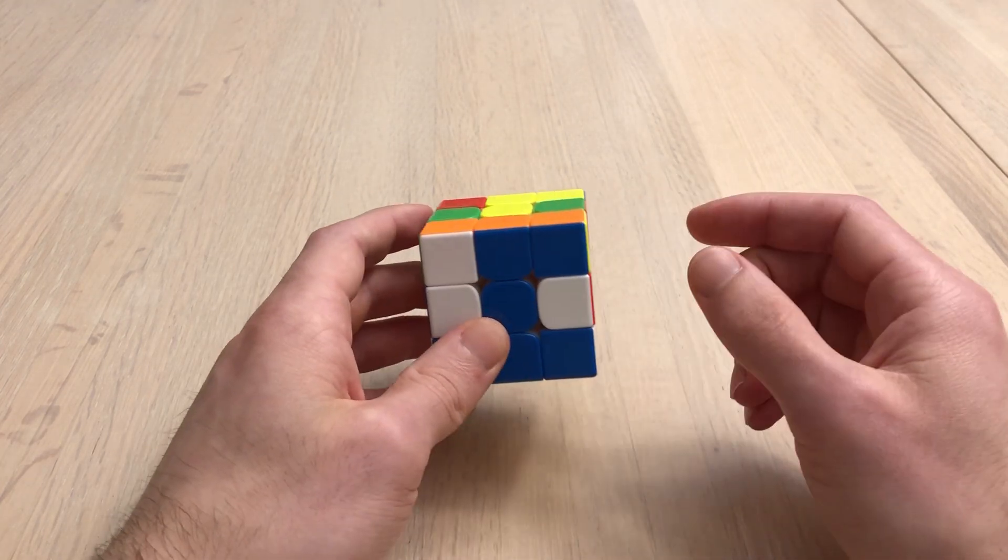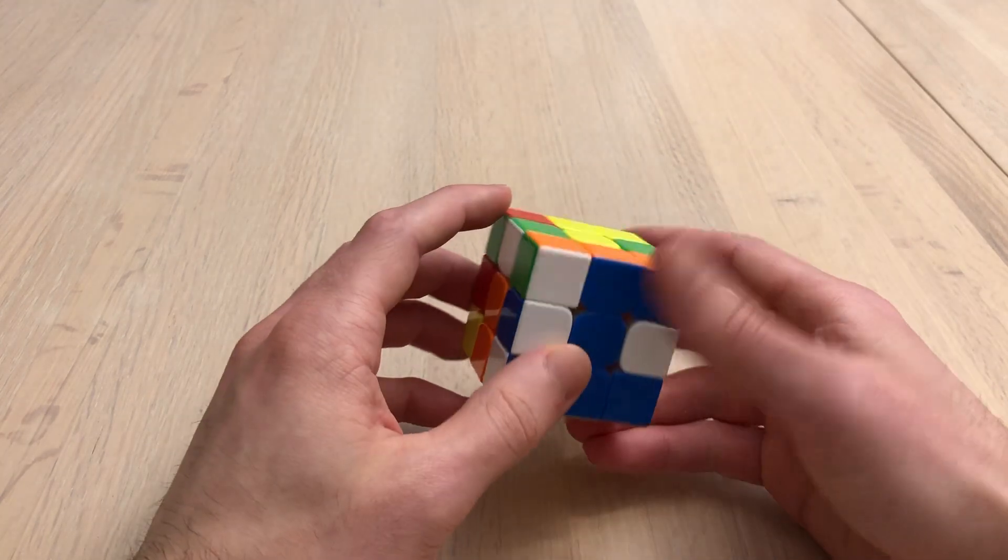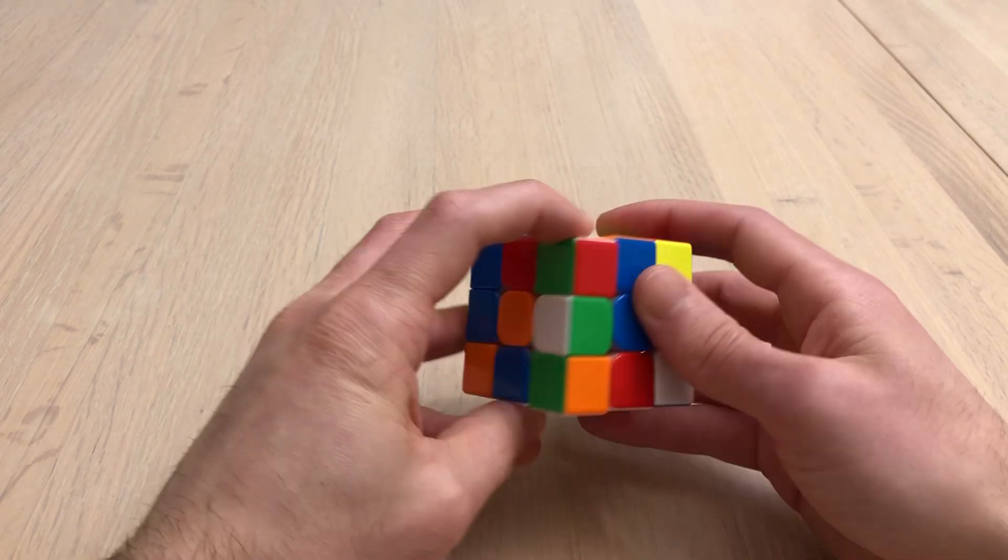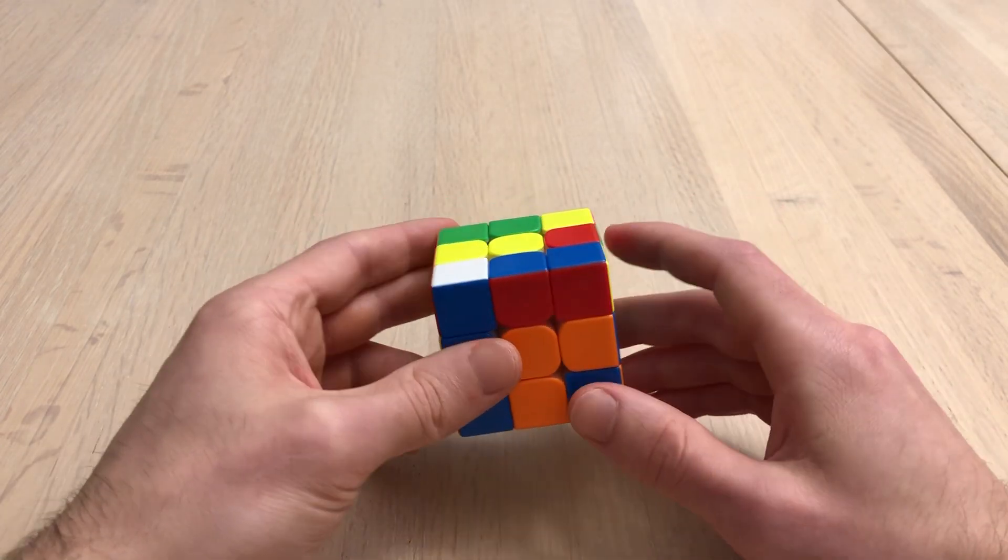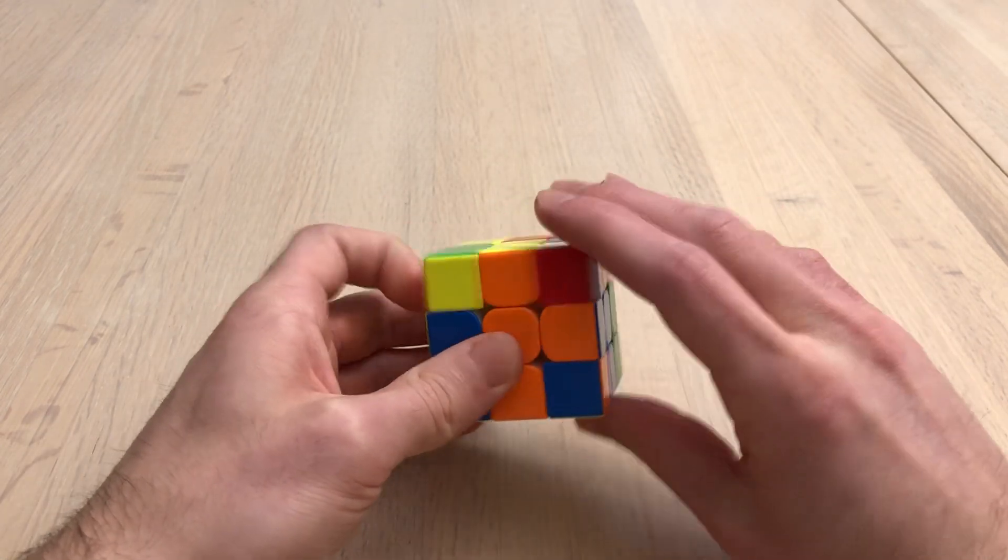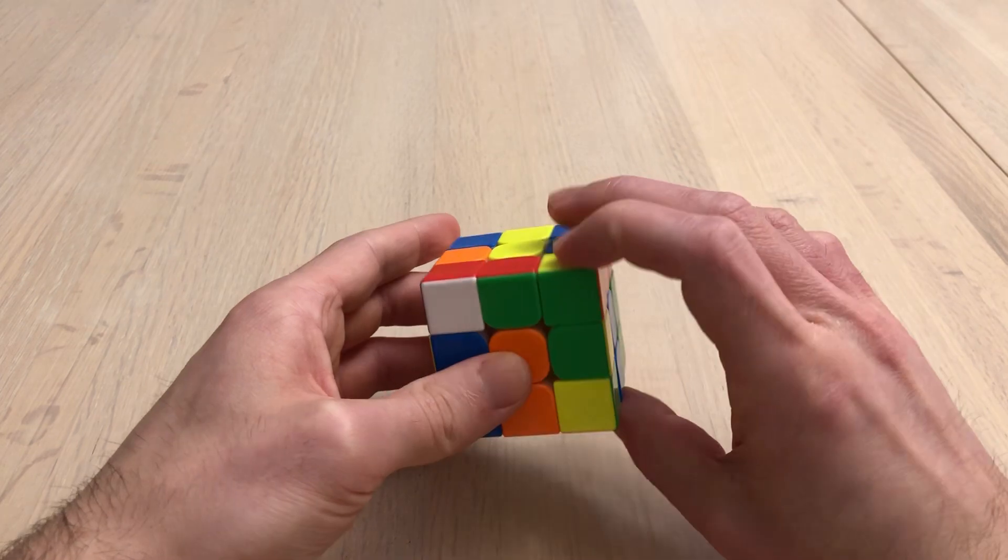And make sure that it's as fast as you can get it to. So you want to work on your cross, inspection, maybe predicting first pair. And then you want to focus on look-ahead, right?